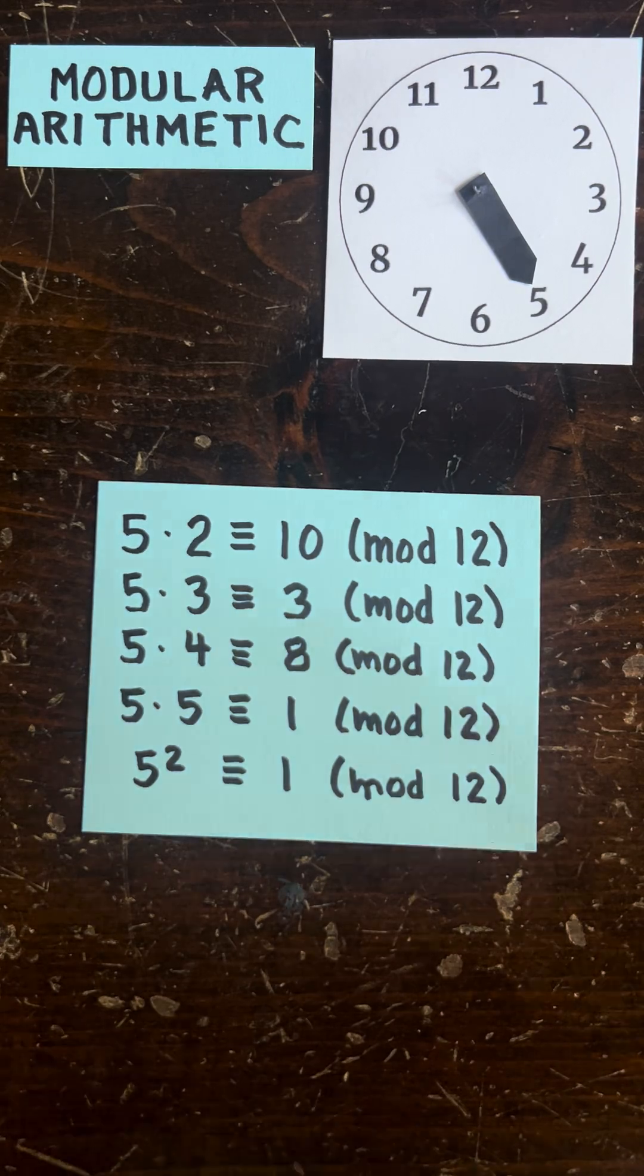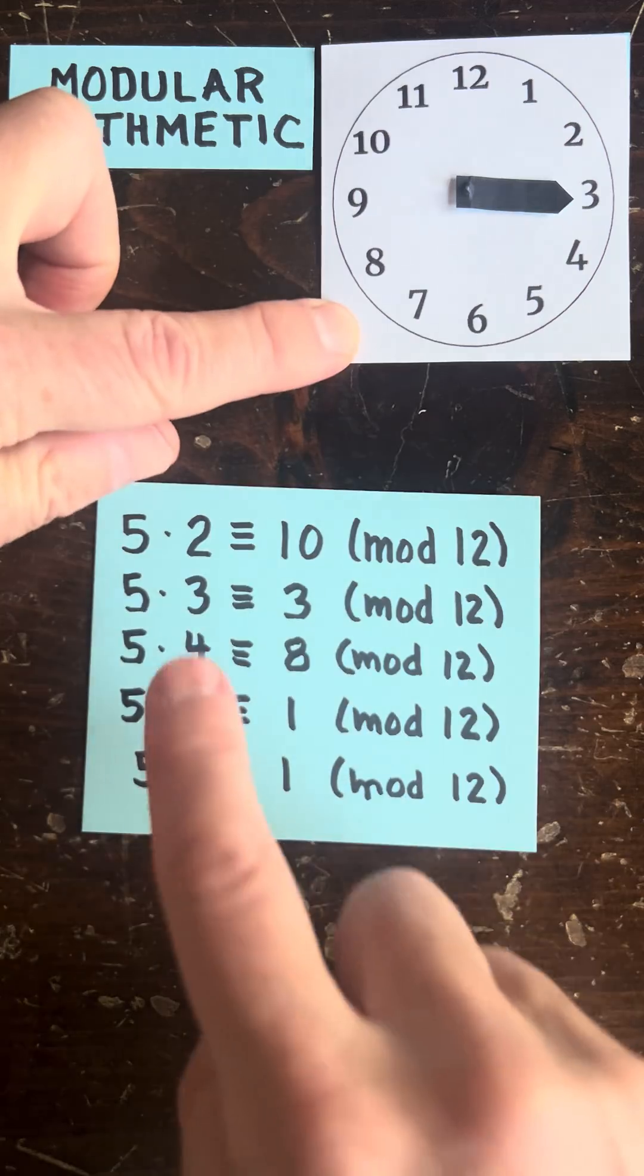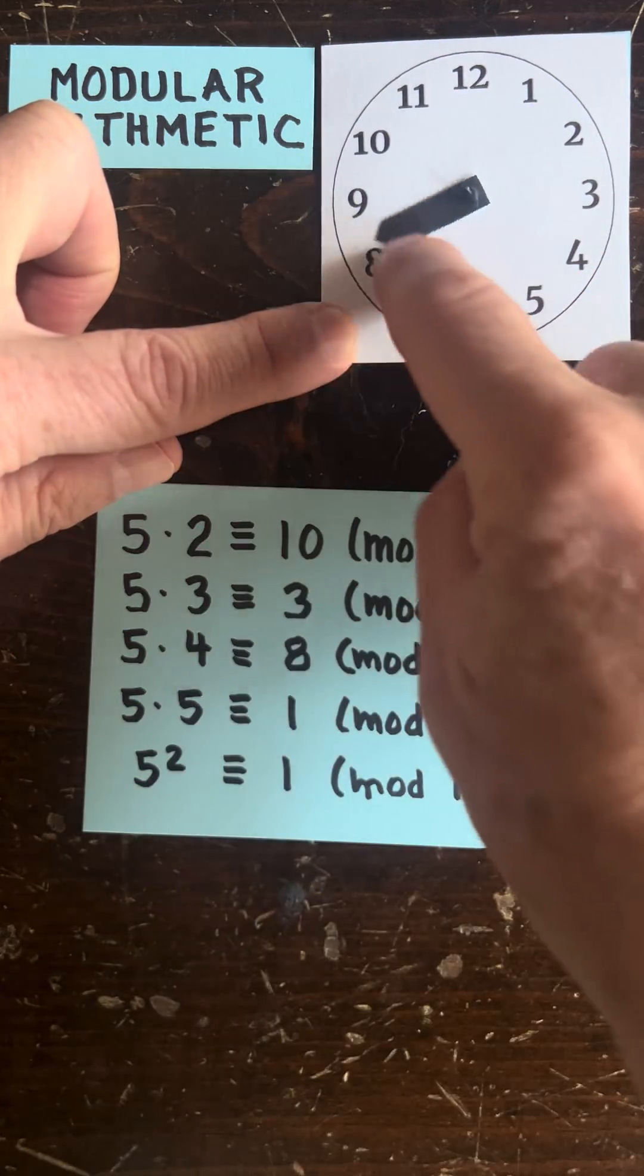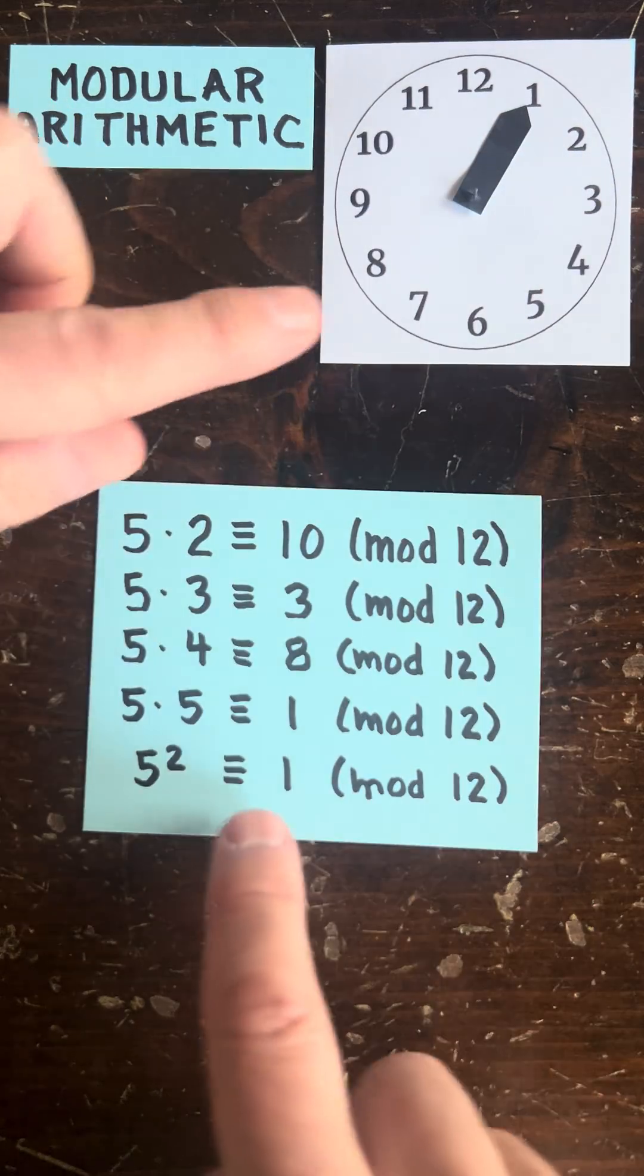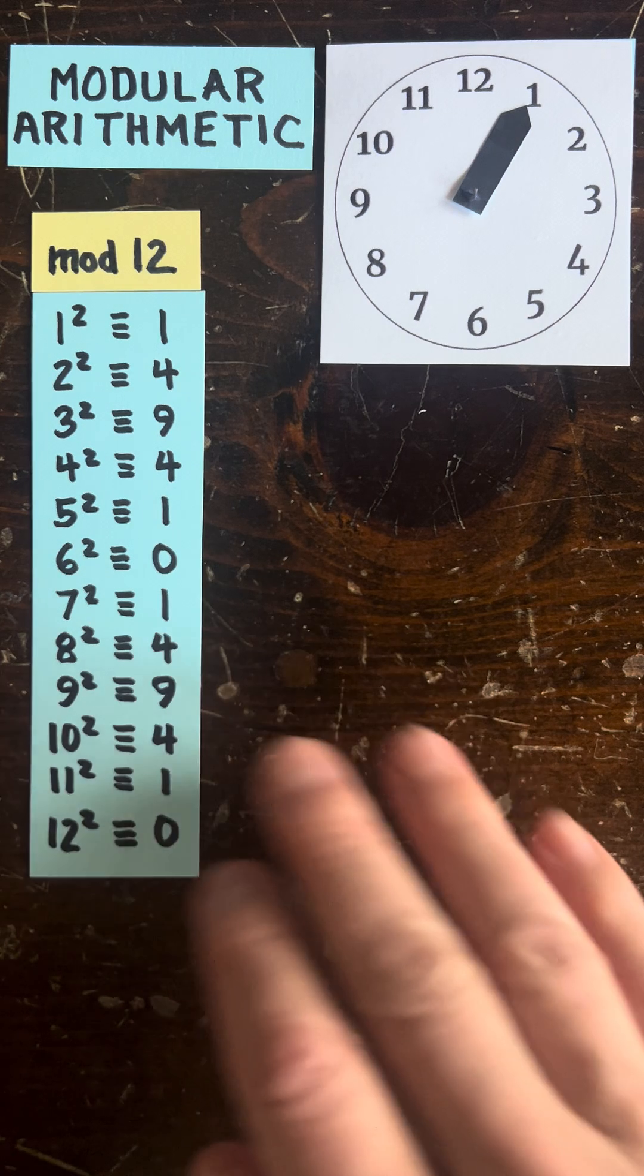Modular arithmetic in 100 seconds. Start with 5 o'clock times 2 is 10 o'clock, times 3 is 15 o'clock, which is 3 o'clock, times 4 is 20 o'clock, which is 8 o'clock, and times 5 is 1 o'clock. So 5 squared is 1 o'clock.